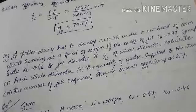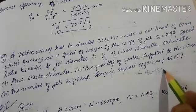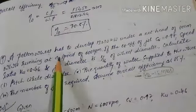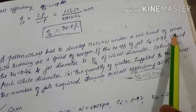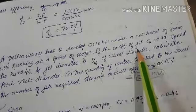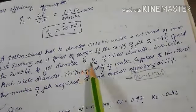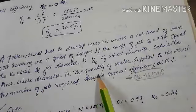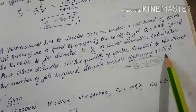Next design problem: a Pelton wheel has to develop 13,030 kilowatt under a net head of 800 meter while running at 600 rpm. Cv = 0.97, speed ratio Ku = 0.46, jet diameter = 1/16 of wheel diameter. Calculate the pitch circle diameter, quantity of water supplied, and number of jets required. Assume overall efficiency = 85%.